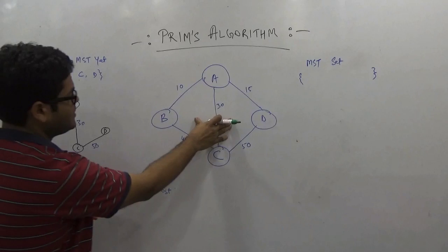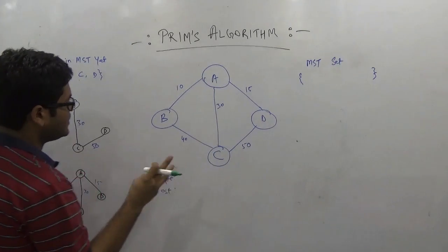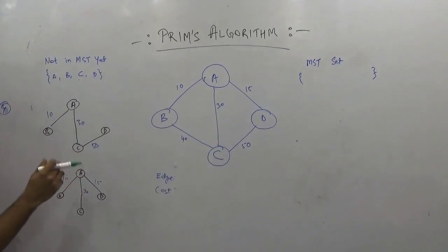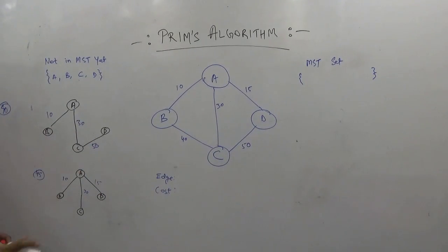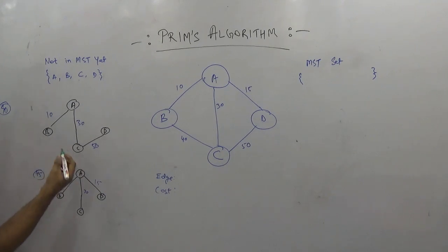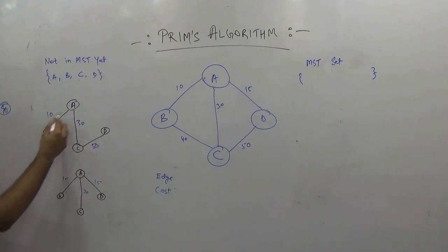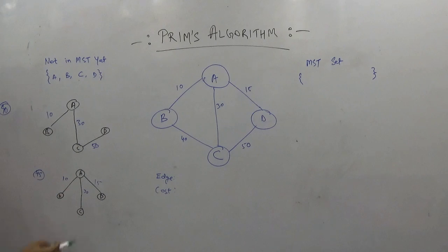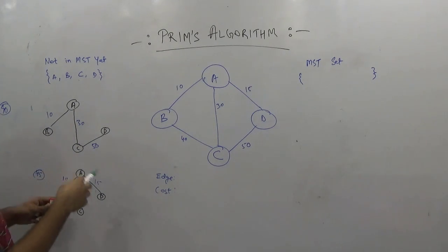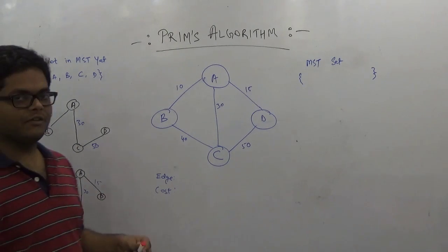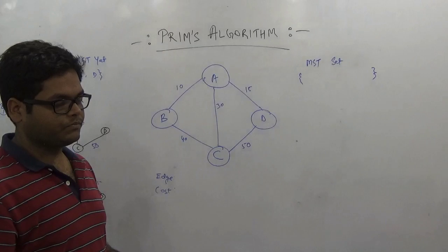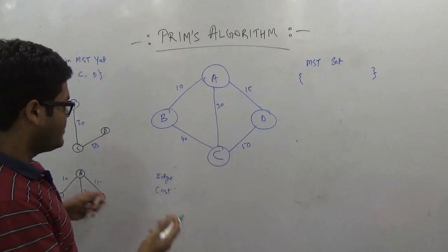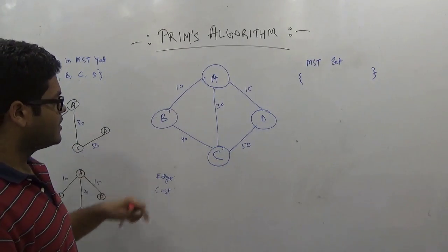For example, for this graph we have four vertices, so we need three edges that connect all four vertices together without any cycle. Here is one example: we have BA, AC, and CD connected. And here is another: AB, AC, and AD connected. Similarly, you can draw other spanning trees. We can have many spanning trees for this given graph.